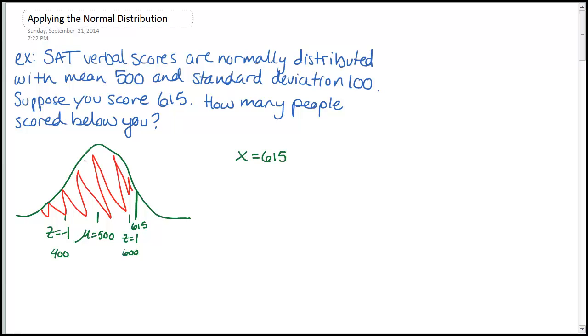So this is like the problems that we were looking at in the last video. We want to know what percentage or what decimal of the total number of people would be to the left of 615. Now of course we can't just look up 615 in the table. This is an SAT score. So the first thing we have to do on these problems is to actually compute the z-score that we're interested in.